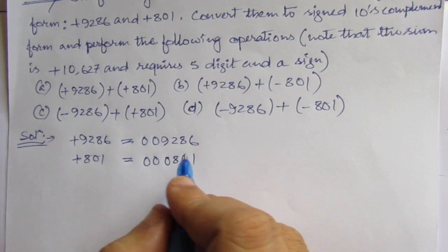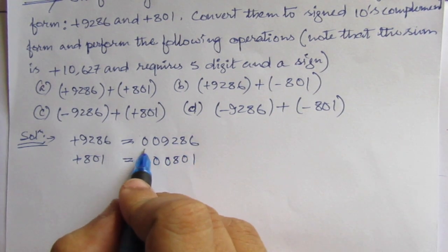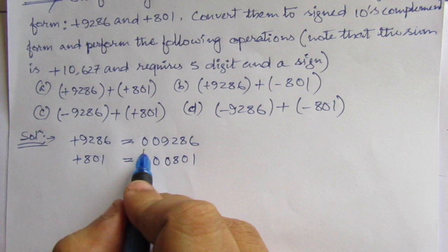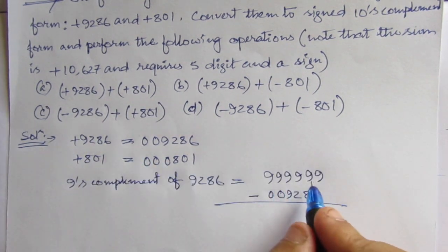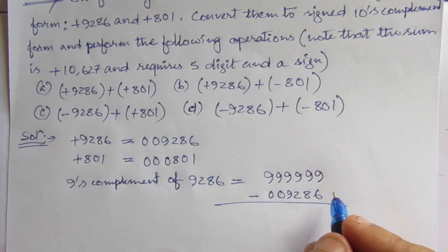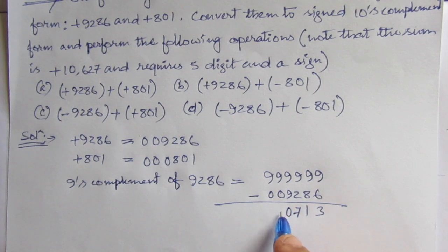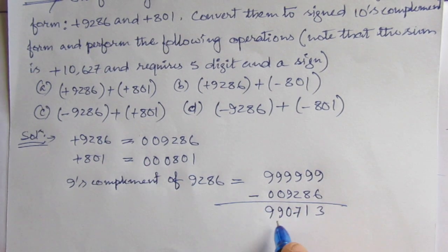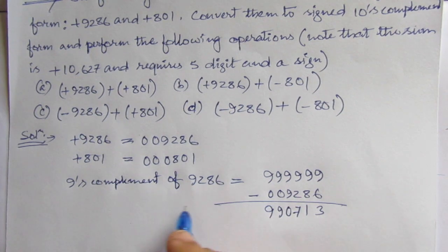Out of which 5 of them are representing the magnitude and the most significant bit is representing the sign. 9's complement. So, we have to do all the operations using 6 digits. 3, this is 1 and 7, 0, 9 and 9. That means 9, 9, 0, 7, 1, 3. This is 9's complement.